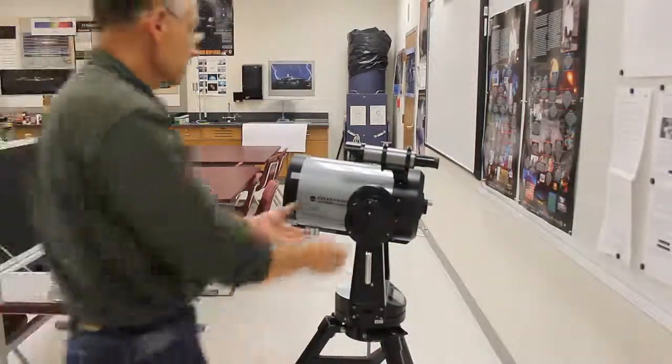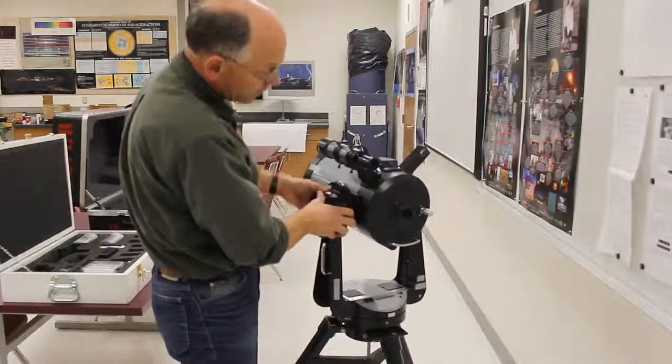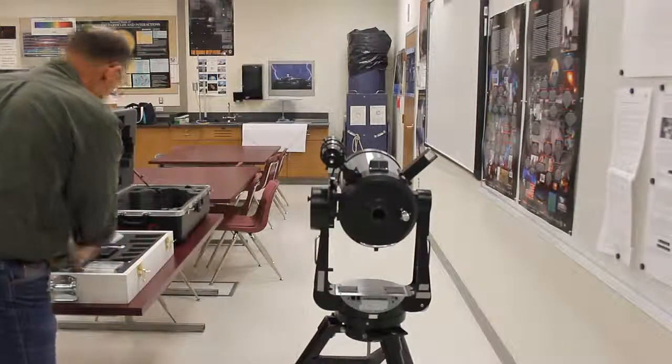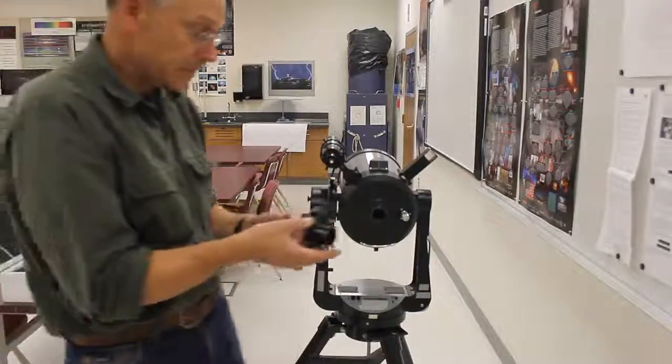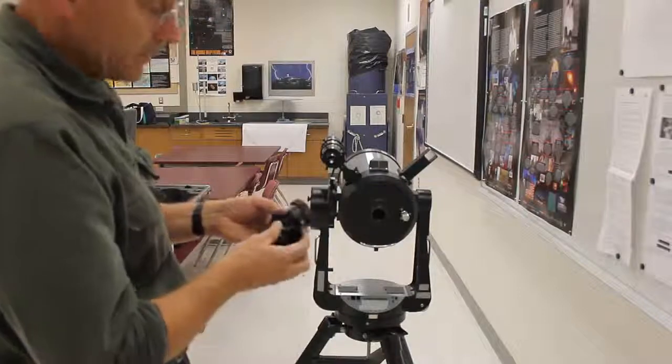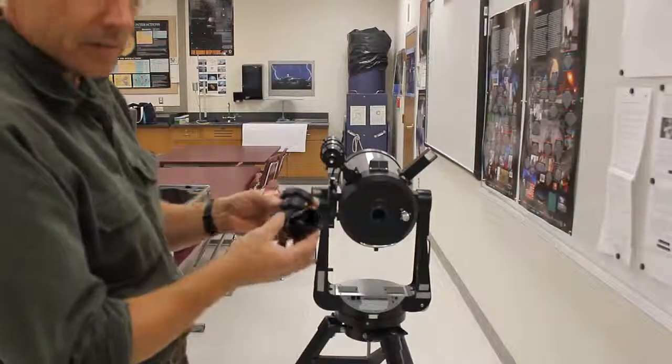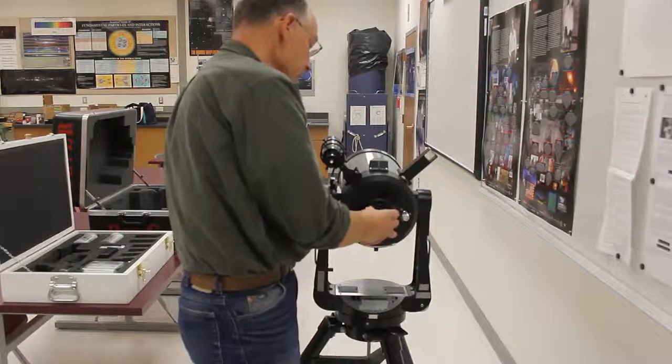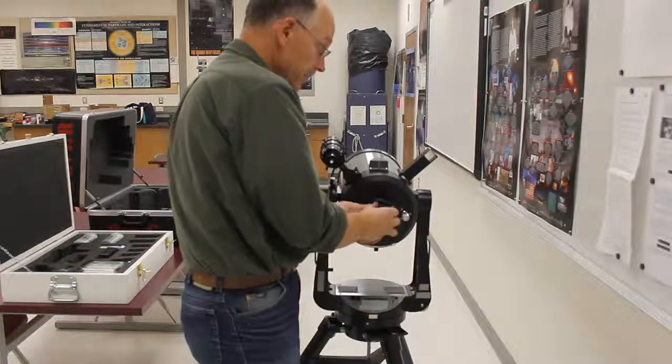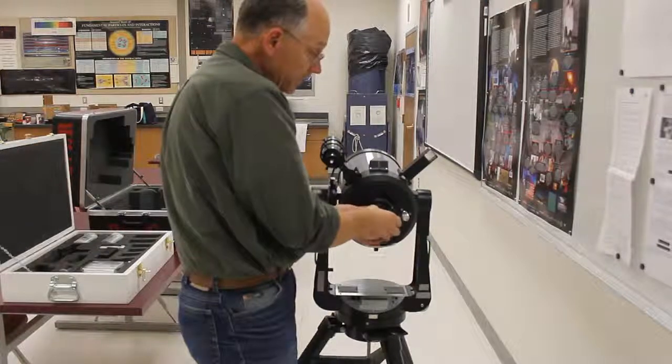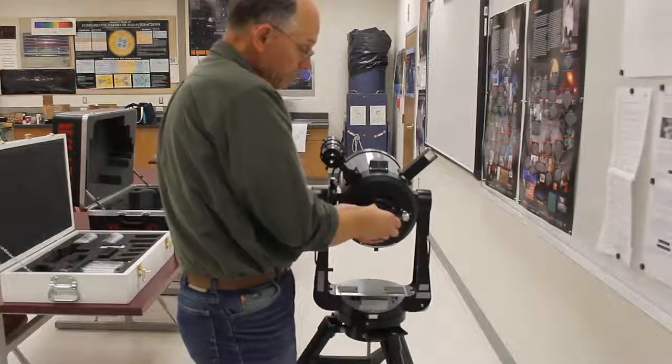So, what's next on this one? We've got almost everything on except the star diagonal and the eyepiece. Here's the star diagonal for this one, it's also called the visual back on here. We leave this assembled the way it is, so I'll just take this and screw it onto here, making sure I don't get it cross-threaded. It's only the big ring that I do anything with, and that's on. Now it's ready for an eyepiece.